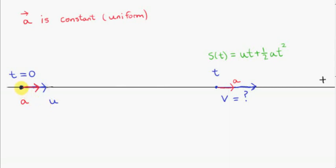Here we have a particle moving in a straight line with constant or uniform acceleration a. At t equals 0, the speed of the particle is u. At some time t later, the speed of the particle is v. Because a points in the same direction as the motion of the particle, the speed is increasing. The acceleration vector never changes — it's constant, always pointing in the same direction and having the same magnitude.